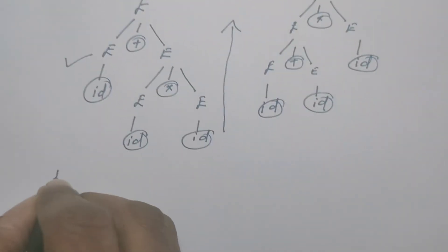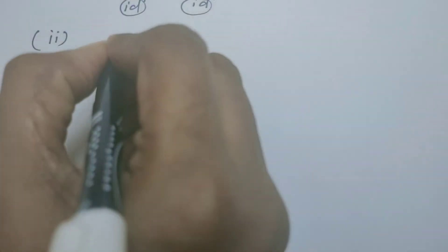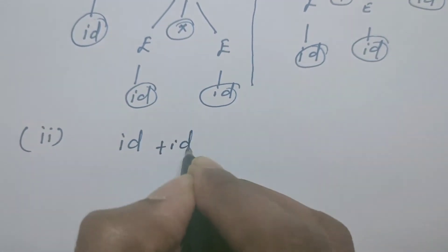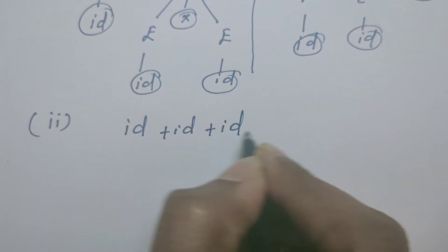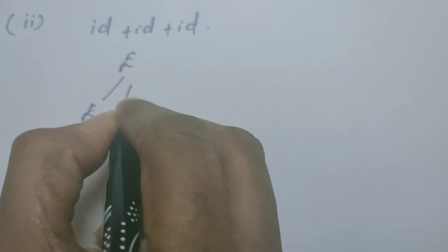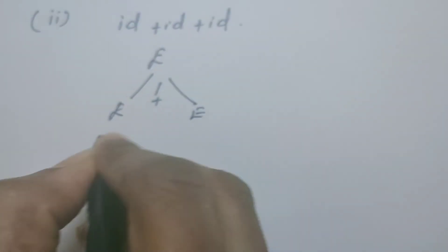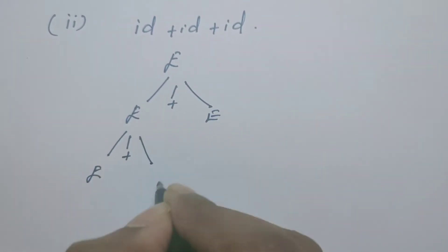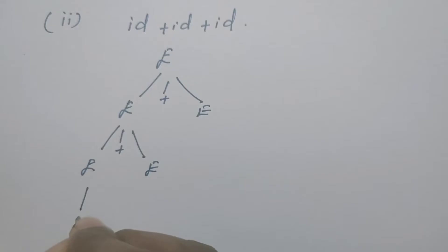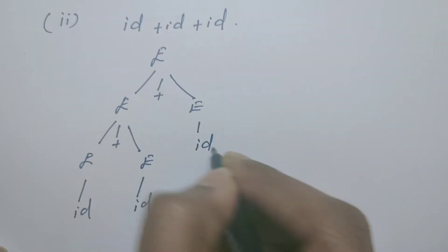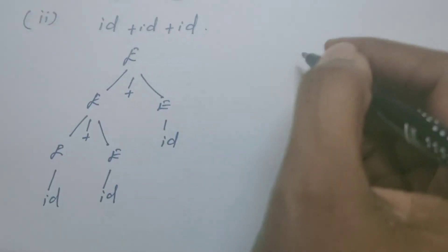Now let me take another example. In this case, I consider the string ID plus ID plus ID. Let me draw the parse tree. E can be replaced by E plus E. Now this E can be replaced by another E plus E. Every E is replaced by ID. So I obtained the string ID plus ID plus ID.